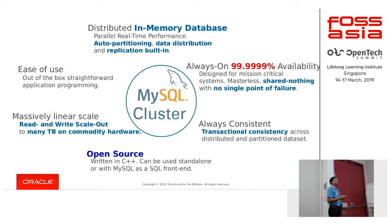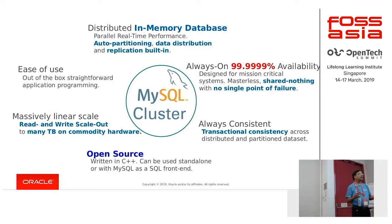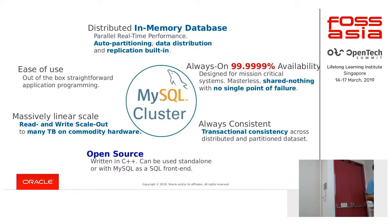MySQL cluster achieves six-nines availability, meaning less than 30 seconds of downtime in a year — this has been verified by customers. It uses a shared-nothing architecture, where no data is shared across nodes; each node stores its own local data. And there is no single point of failure — it can sustain multiple failures at any point in time.